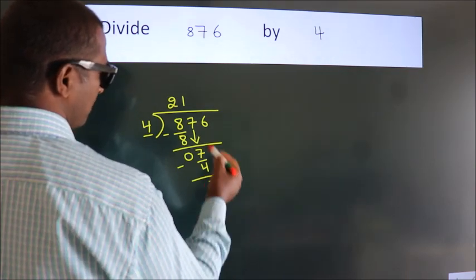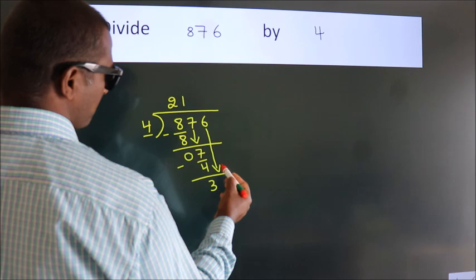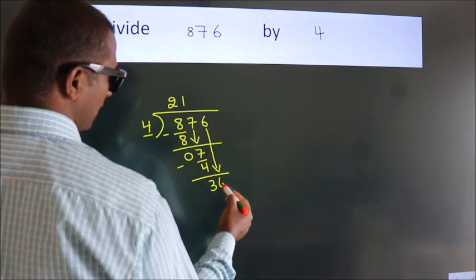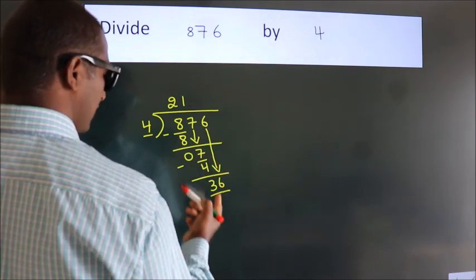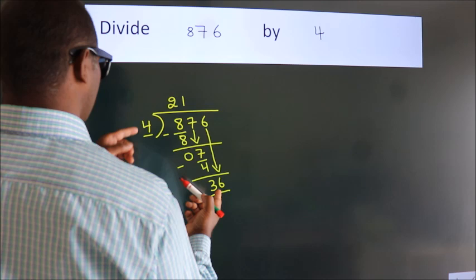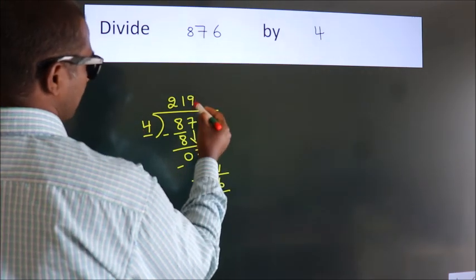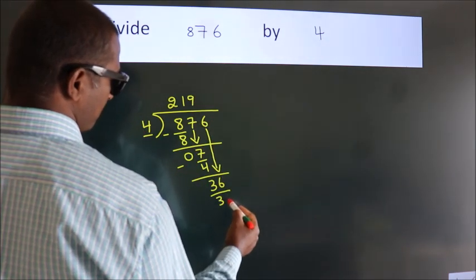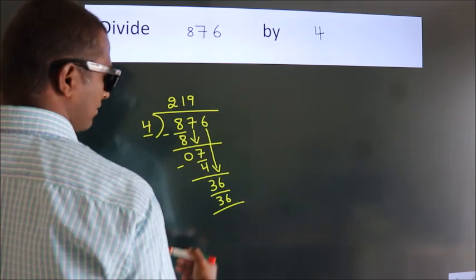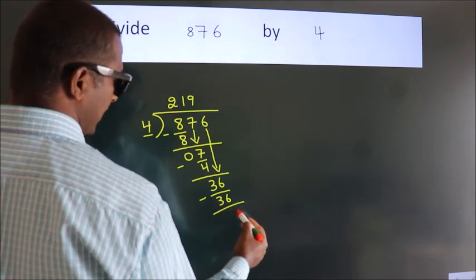After this, bring down the beside number. So, 6 down. 36. When do we get 36? In the 4 table. 4 times 9 is 36. Now, we subtract. We get 0.